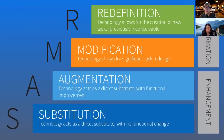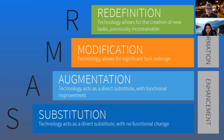The SAMR model is basically a ladder — as you move up, you move through four stages. It provides a way to look at how technology tools impact teaching and learning. This model focuses on the learning that's taken place and not the actual tech tools. There's an enhancement phase at the beginning rungs and a transformation phase as you climb higher.